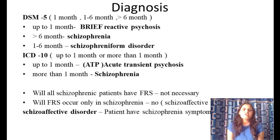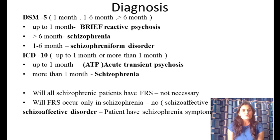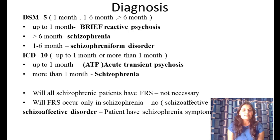Regarding diagnosis: previously we used the Four A's or First Rank Symptoms, but now we use DSM-5 or ICD-10. DSM-5 uses a 1-month and 6-month concept: symptoms under 1 month is brief reactive psychosis; more than 6 months is schizophrenia; 1–6 months is schizophreniform disorder. ICD-10 diagnoses schizophrenia when symptoms persist for more than 1 month.